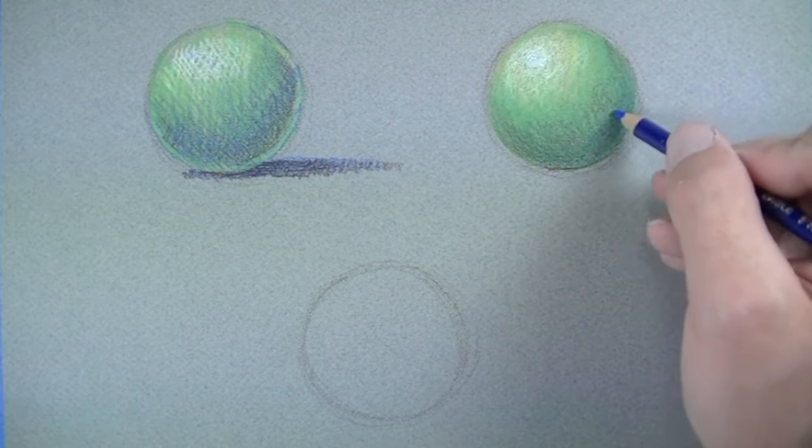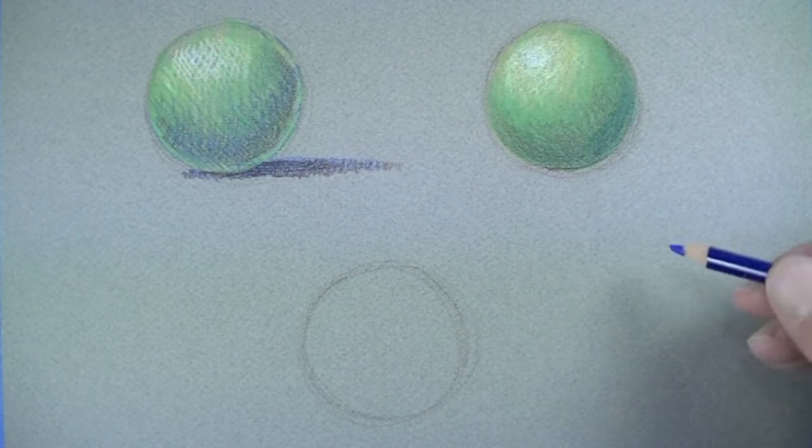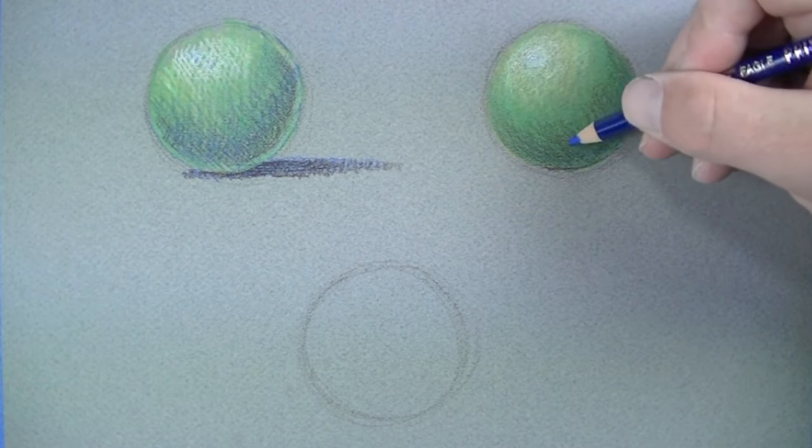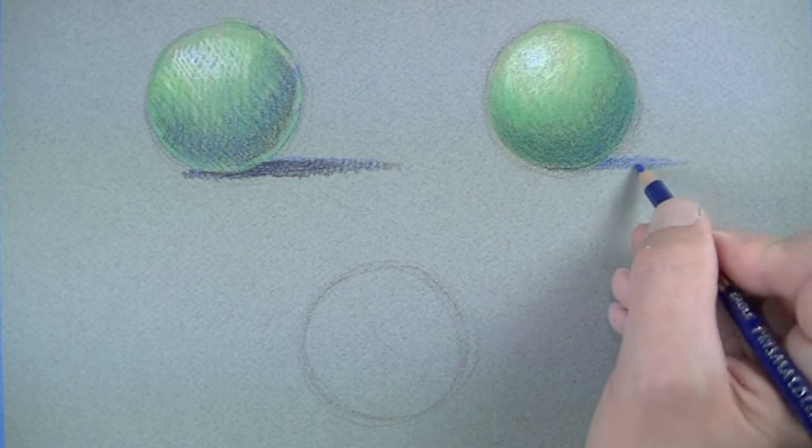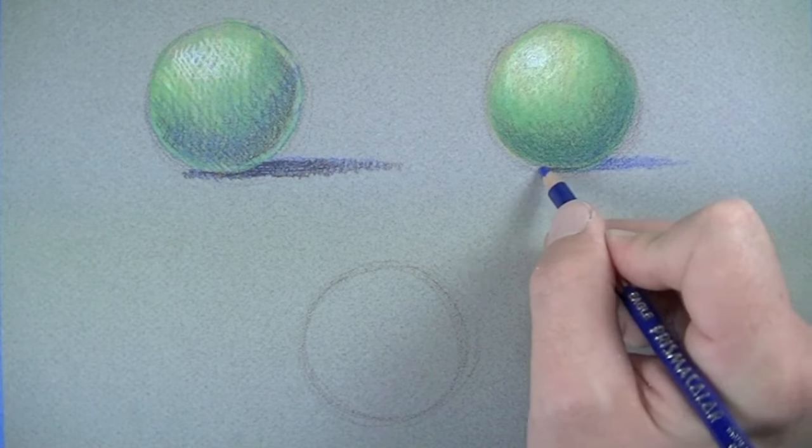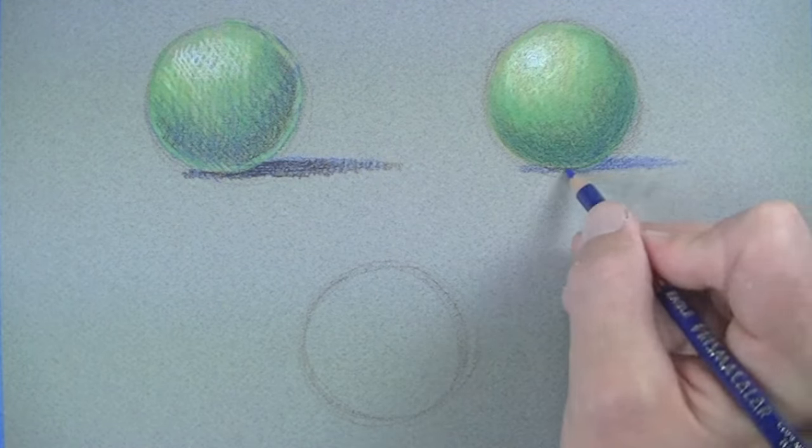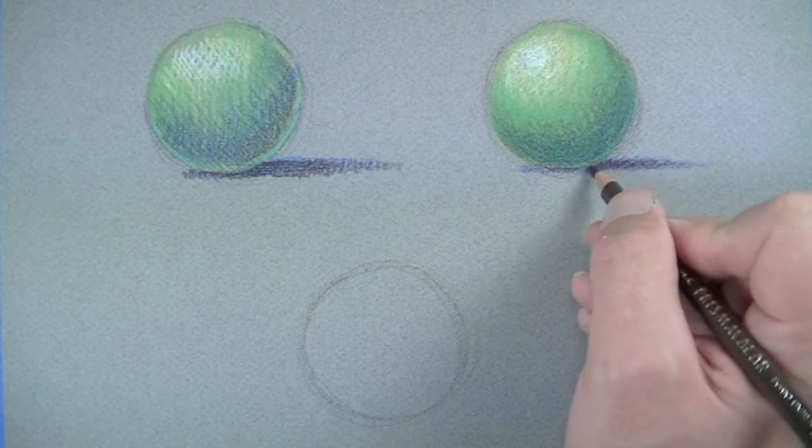Lastly, a layer of blue can cool down the tones in the core shadow. We'll also add a cast shadow underneath the sphere here as well. We'll begin with a dark blue, then we'll layer on top of that dark blue with a dark brown.